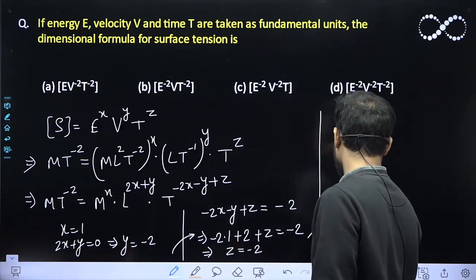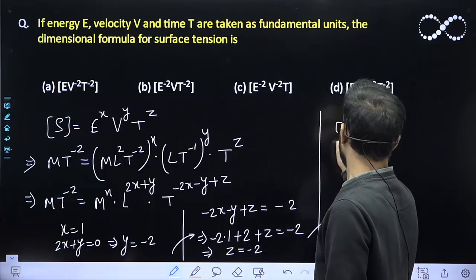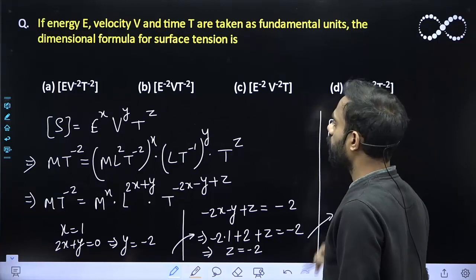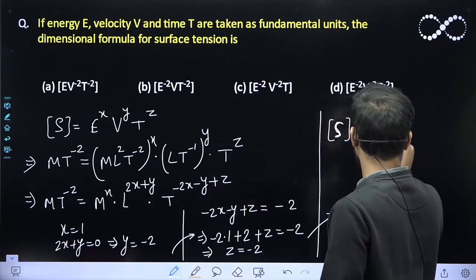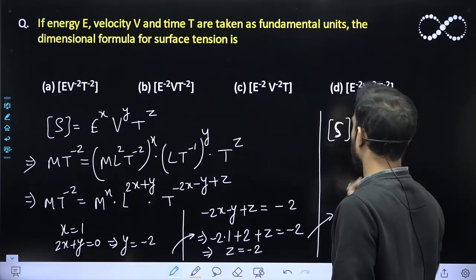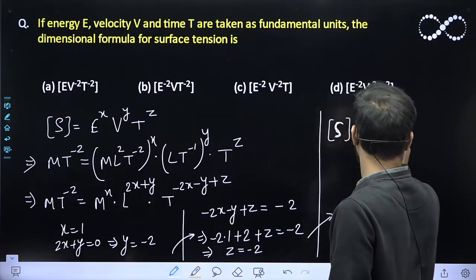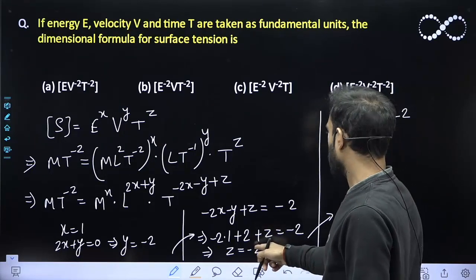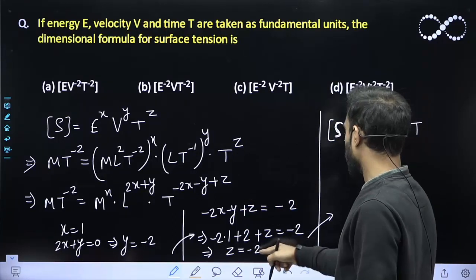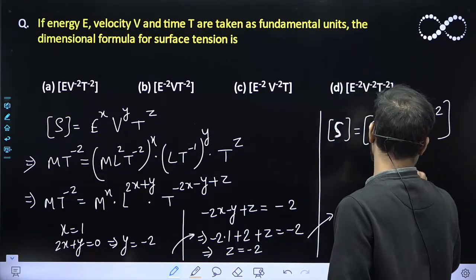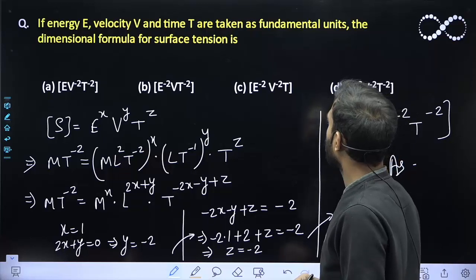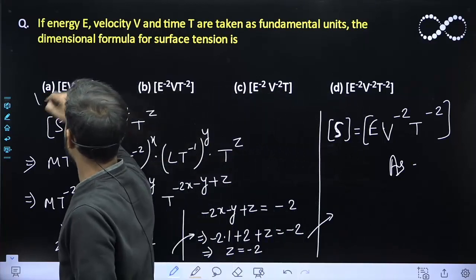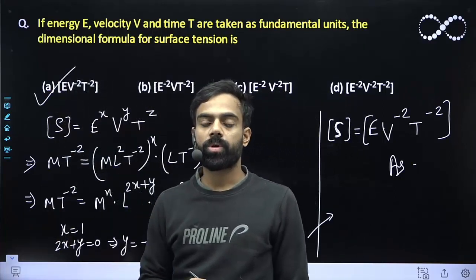Now I have the values: x equals 1, y equals minus 2, and z equals minus 2. So the dimension of S is equal to E raised to power 1, V raised to power minus 2, and T raised to power minus 2. Checking the options, that matches option A. I hope you understood this question, students.